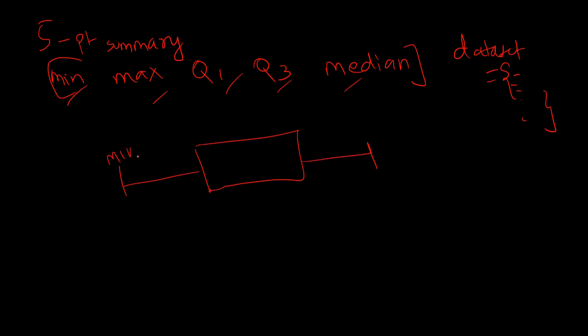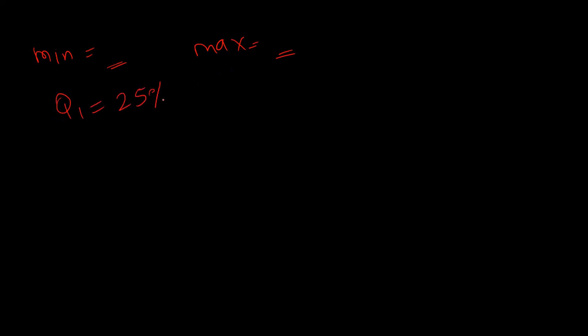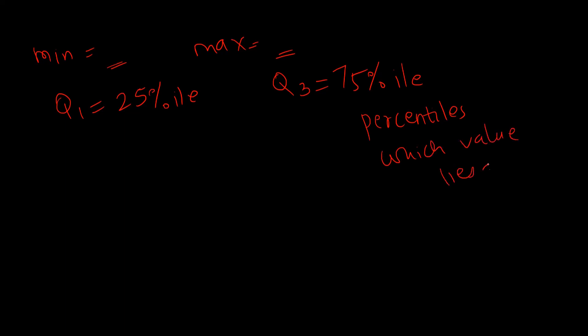This is the minimum value, this is the maximum value, this is Q1, this is Q3, and that's your median — and this is what forms your IQR. Formula-wise: minimum is whatever the minimum value in your dataset is; maximum is the maximum value; Q1 is the point at the 25th percentile; Q3 is the 75th percentile data point. I highly urge you to watch that lecture where I've explained percentiles in detail — how to calculate them and which value lies at what percentile.